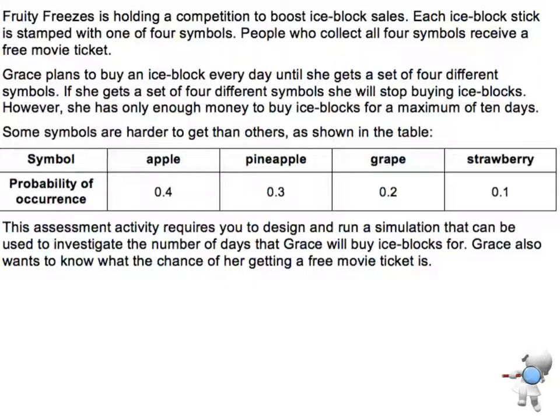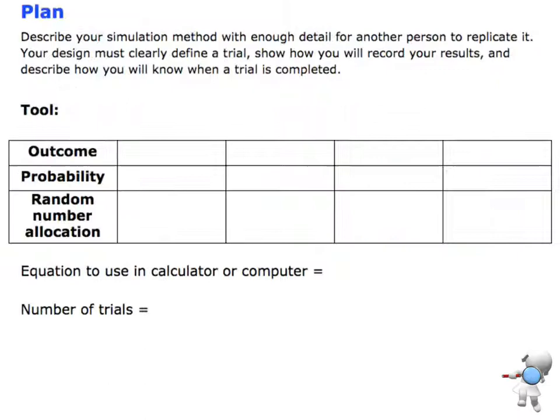Here is our plan section for the Fruity Freeze example. It talks about the problem itself, and here is the information we need to put together in our plan. The first thing we need to do is describe our method in enough detail — we need to clearly define a trial, show how to record the results, and describe how we will know when a trial is completed.